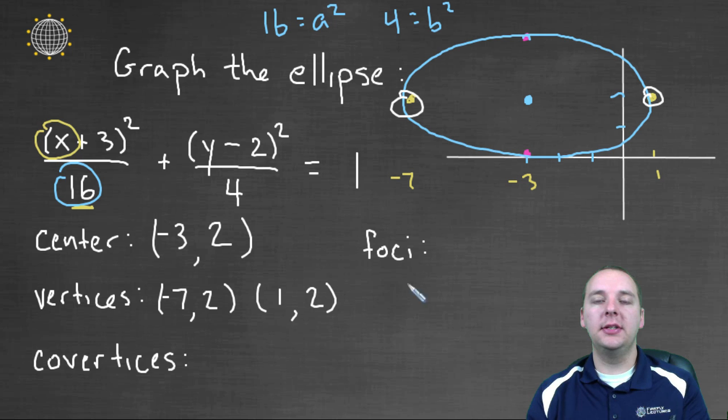Now how about the co-vertices? The co-vertices went above and below (-3, 2). So in this case, the x's will stay fixed, and 2 units above y equals 2 would be 4, and below y being 2 would make 0. So these would be your co-vertices.